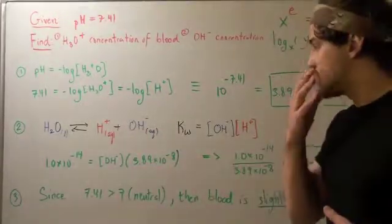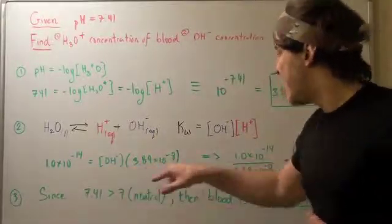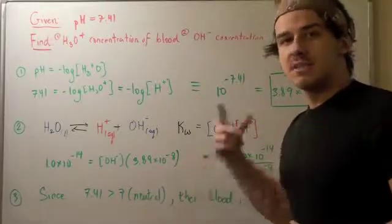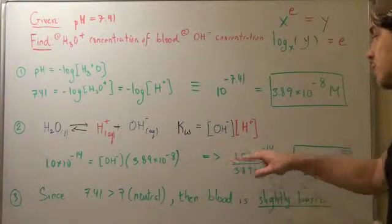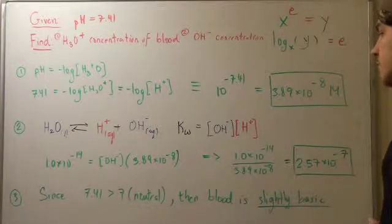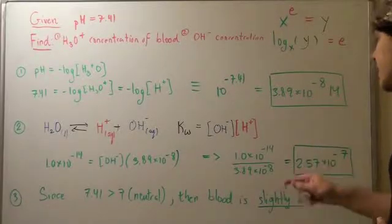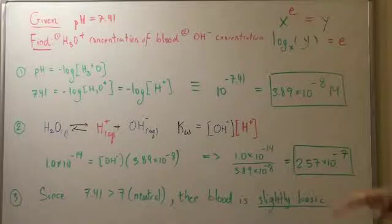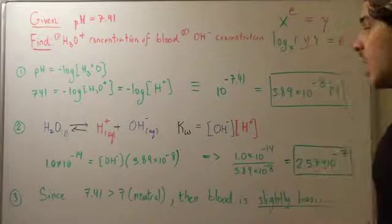So, this equals our unknown times what we found from part 1, 3.89 times 10 to the negative 8. We bring this over here. We solve. Divide 1.0 times 10 to the negative 14 divided by 3.89 times 10 to the negative 8. We get 2.57 times 10 to the negative 7. So, this is our concentration of our hydroxide within our blood.